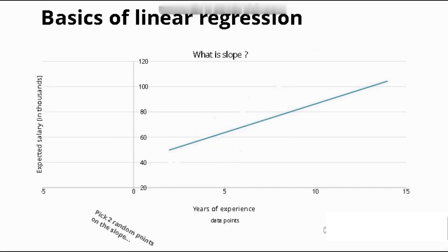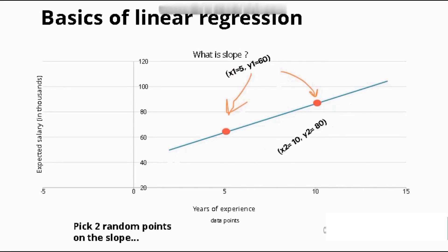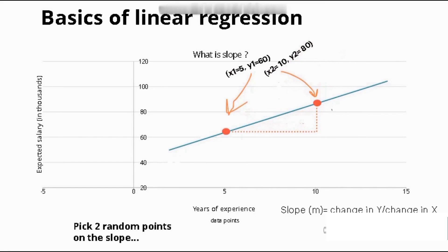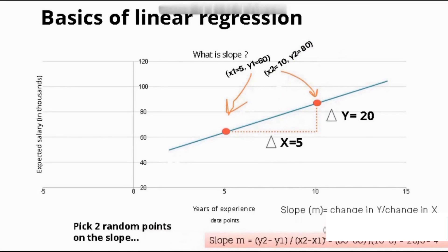Now we will understand what slope is with the help of an illustration. First, pick two random points and plug the values in. Find the change in y — that is y₂ minus y₁ — then find the change in x — that is x₂ minus x₁. The change in y is 20 and the change in x is 5, giving a slope of 4. This indicates that for every five years of experience, salary increases by 20k.